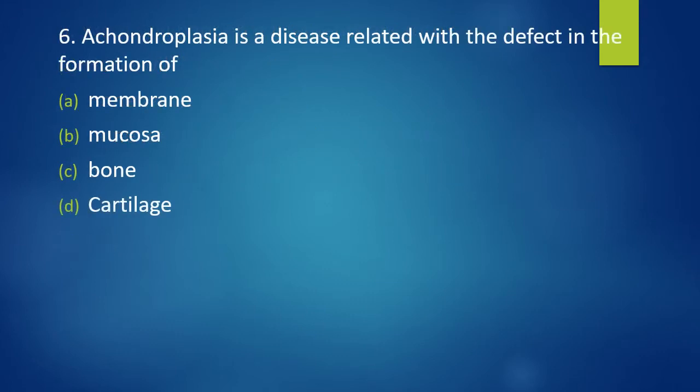Question 6. Achondroplasia is a disease related with the defect in formation of membrane, mucosa, bone, or cartilage. Correct answer is option D. Achondroplasia is related with cartilage.